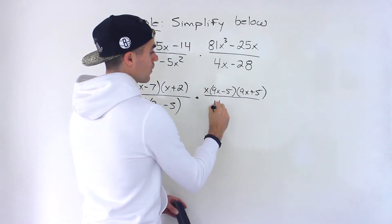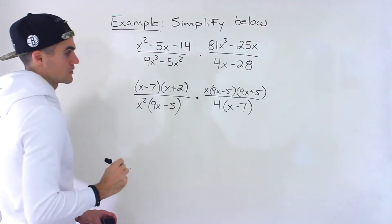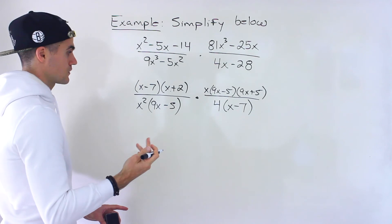And then notice from here, we could take out a 4. And we'd be left with x minus 7. Now, before simplifying here, let's get the restrictions in case they ask for them.